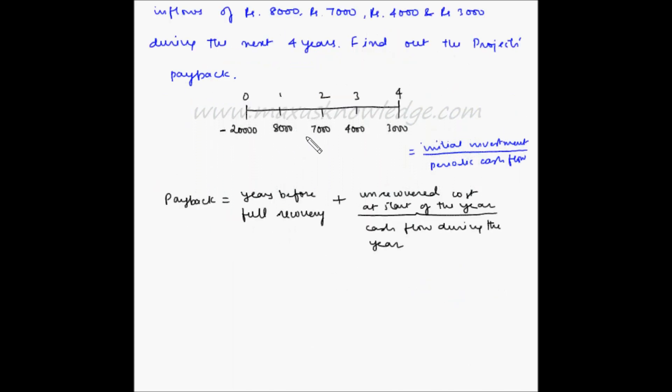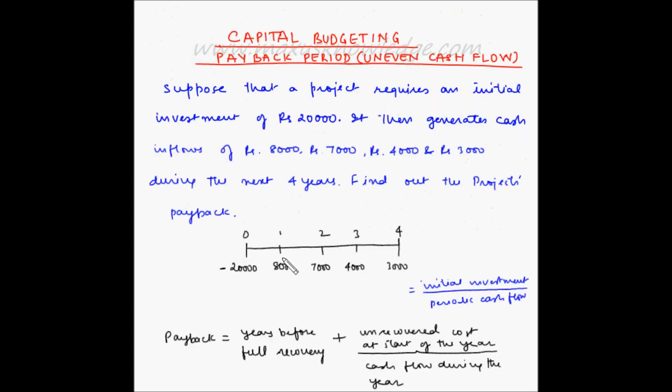Let us note down the cumulative cash flow. First year, we get 8,000 rupees. Second year, we have 8,000 plus 7,000, which is 15,000 rupees. At the end of the third year, we have 15,000 plus 4,000, which is 19,000 rupees. At the end of the fourth year, we have 19,000 plus 3,000 rupees. We can recover 20,000 rupees somewhere in between the end of third year and the end of fourth year.